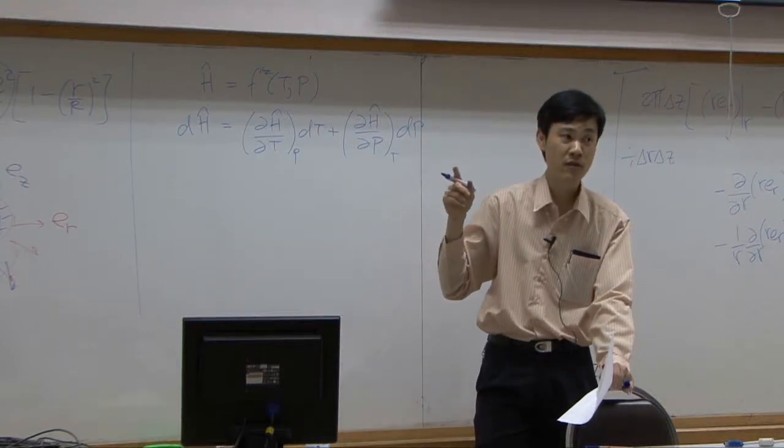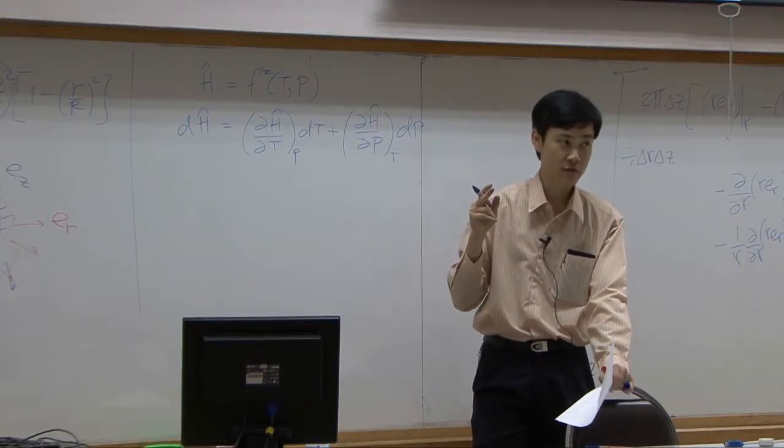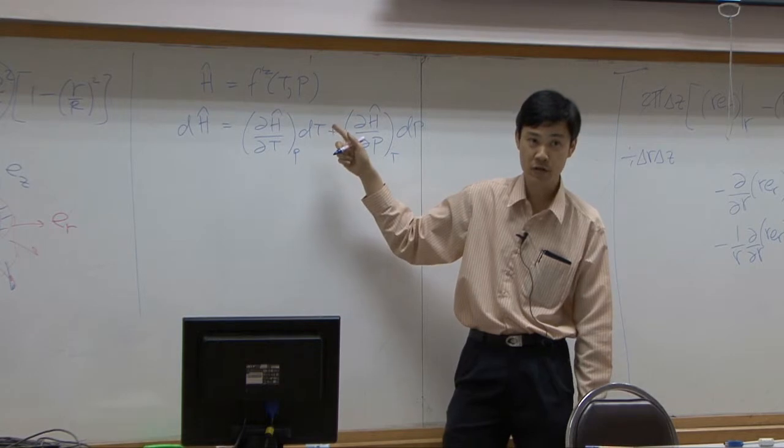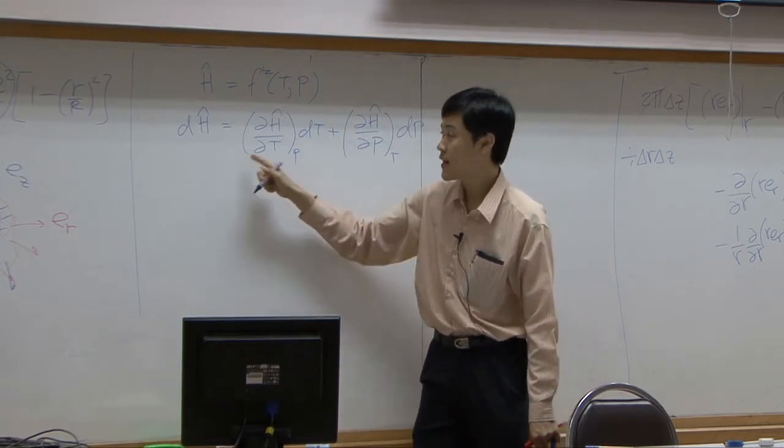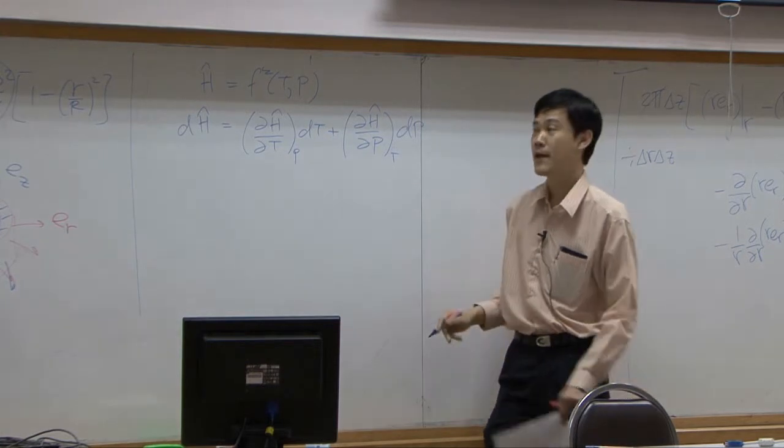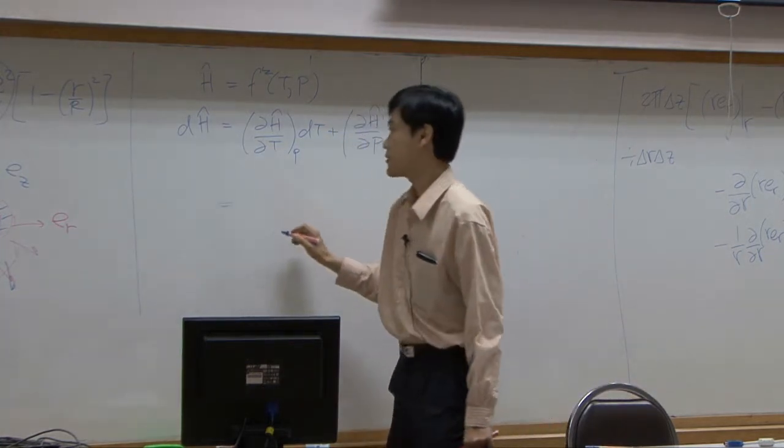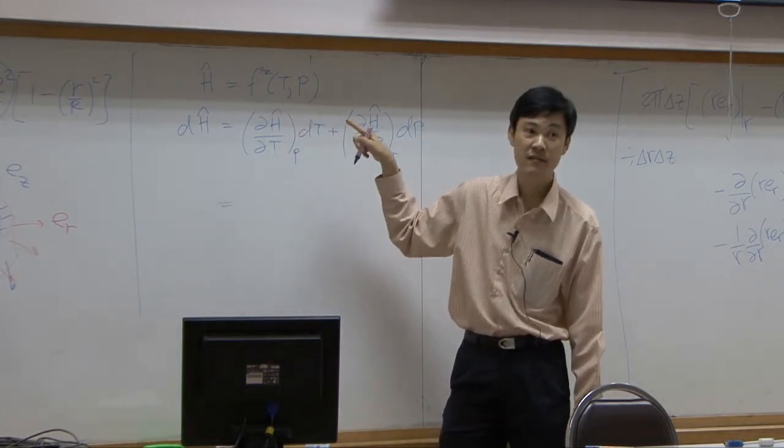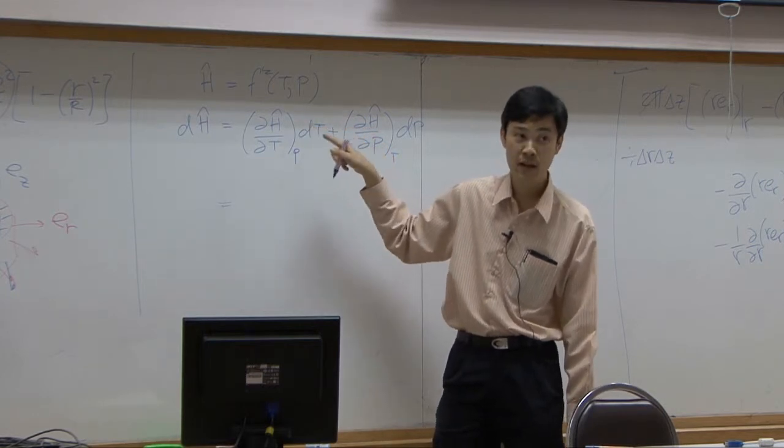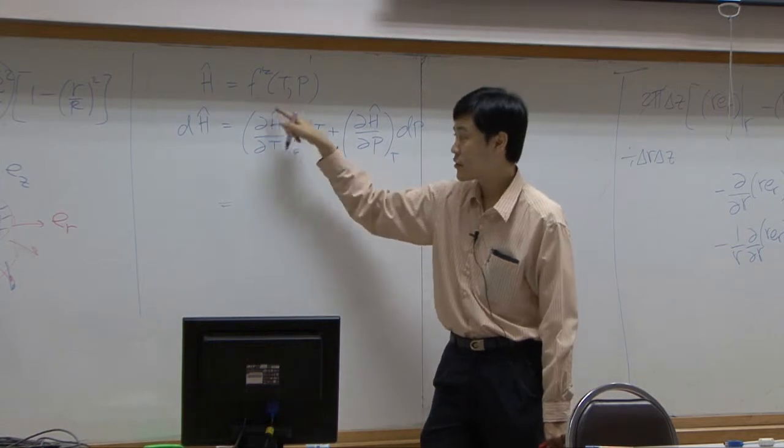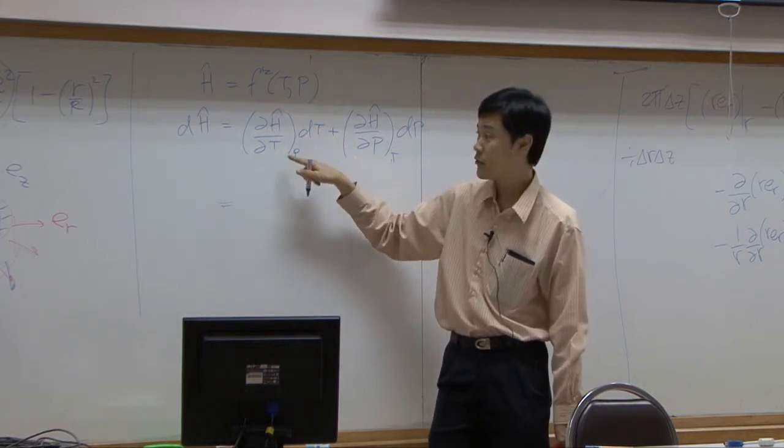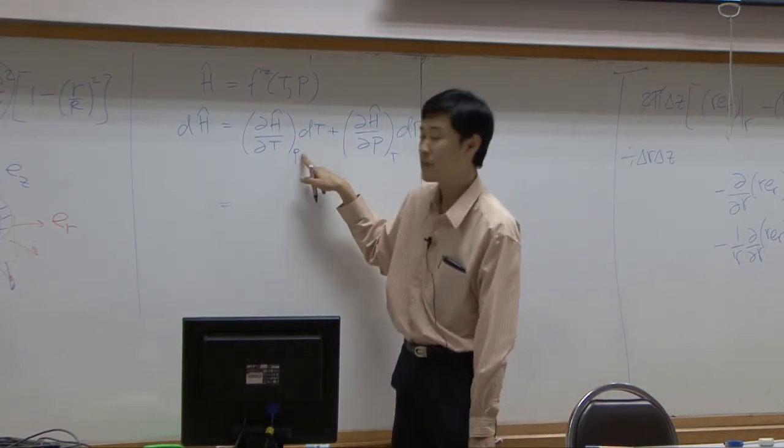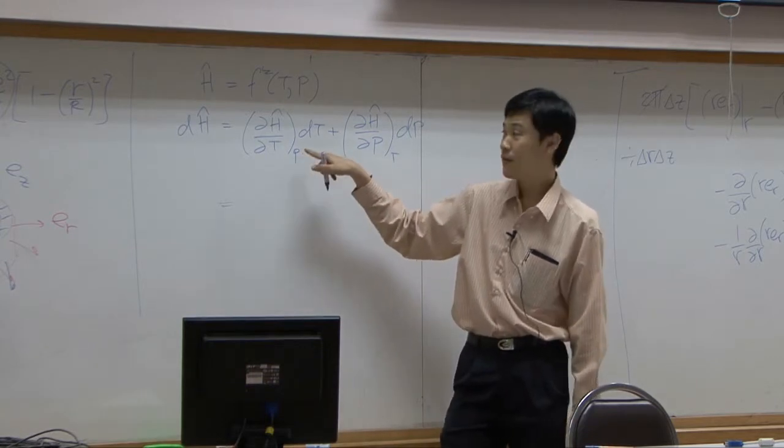Using two variables, I'm going to express enthalpy as a function of temperature and pressure, and then take differentiation to get two terms like this. The first term is enthalpy change. The hat here represents per mass, so this is specific enthalpy. The first term is enthalpy differentiated with respect to temperature at constant pressure. What is this term?